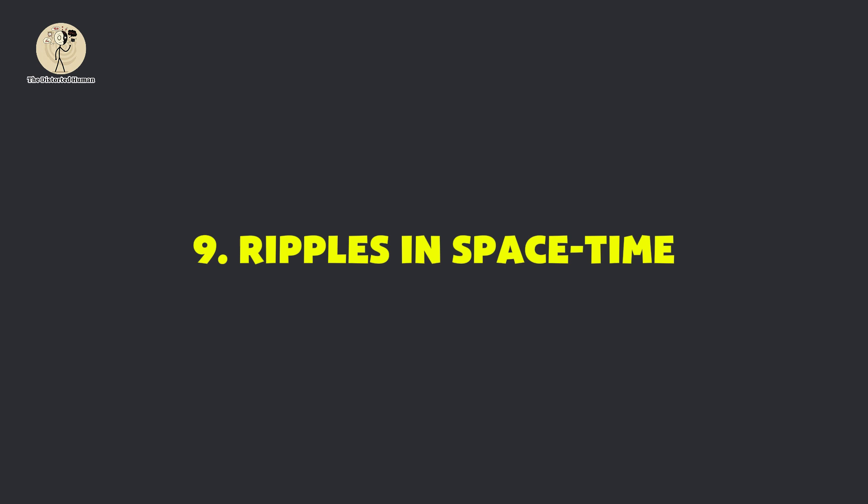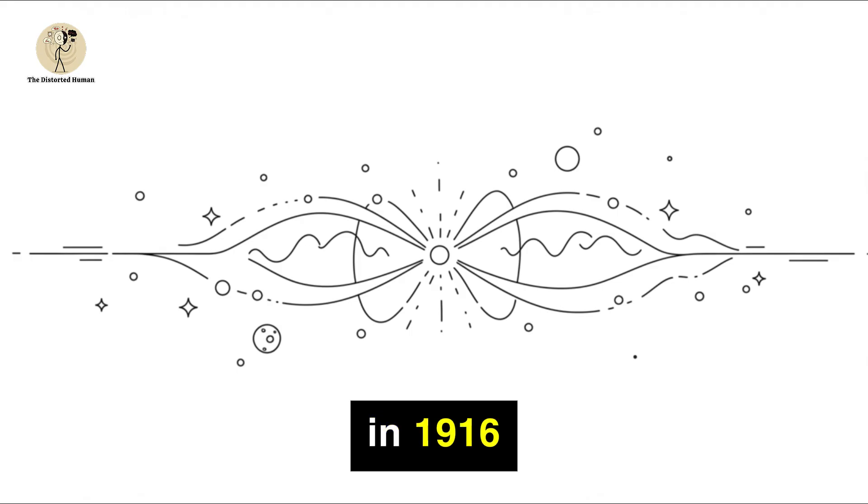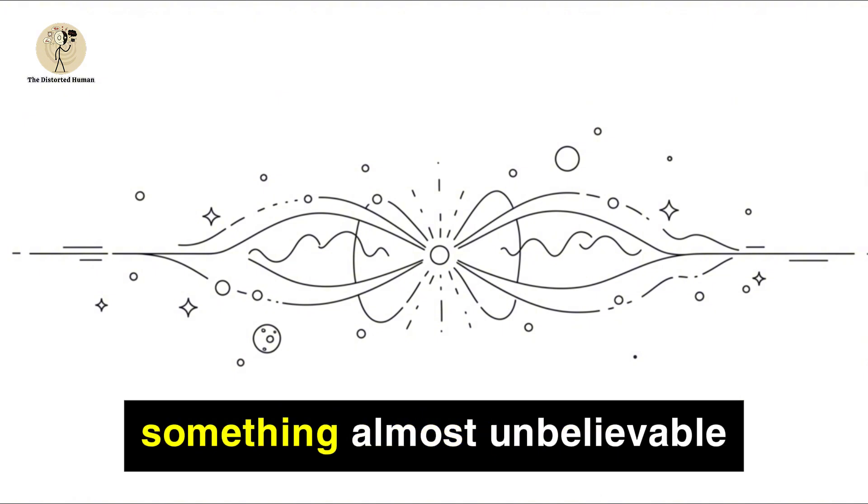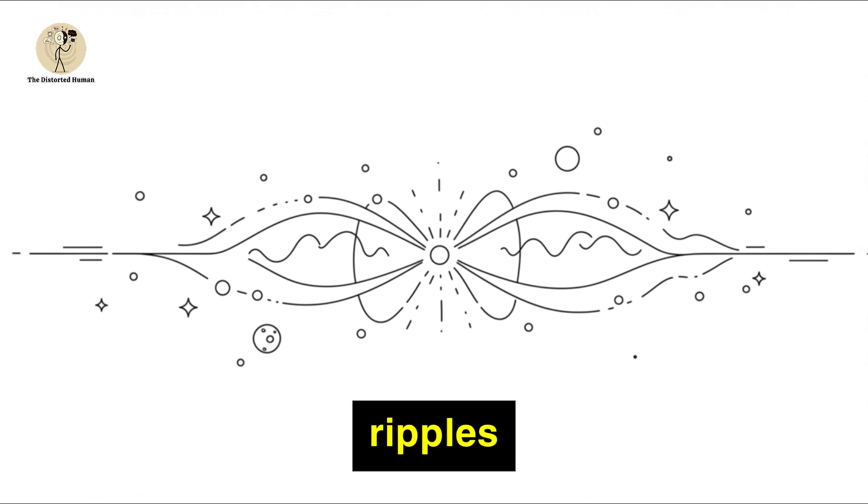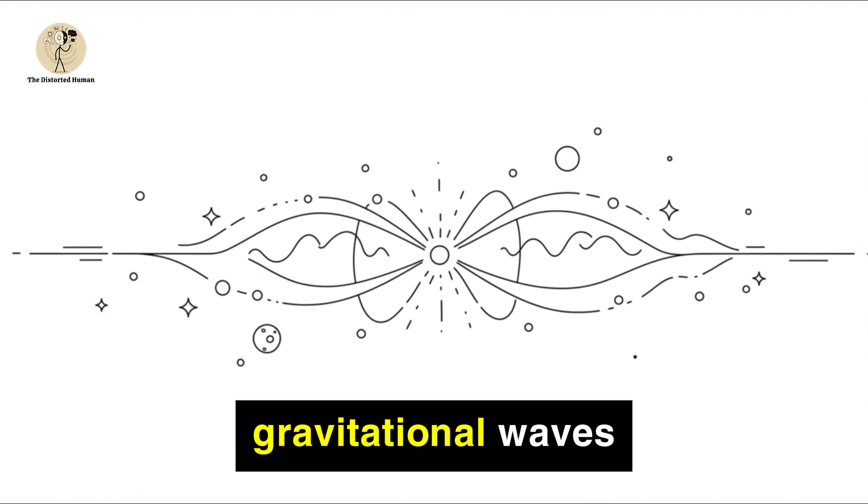Ripples in Space-Time. In 1916, Albert Einstein predicted something almost unbelievable. When massive objects like black holes collide, they send out ripples through the very fabric of space and time. He called them gravitational waves. But these ripples were so tiny, smaller than the width of an atom.